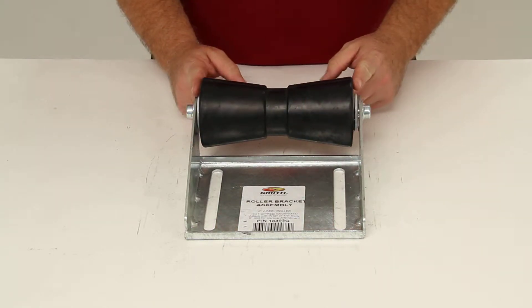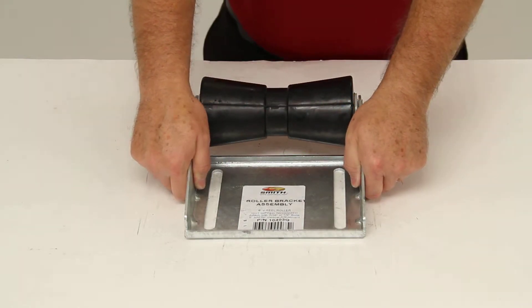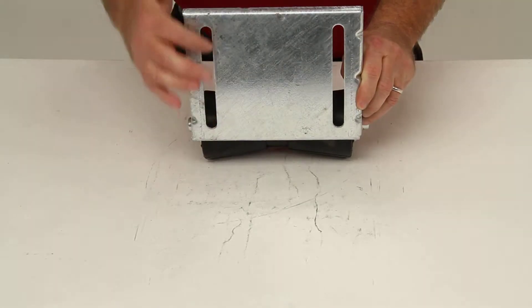It features an 8-inch black rubber keel roller and a galvanized steel panel bracket with slotted mounting holes for adjustability.